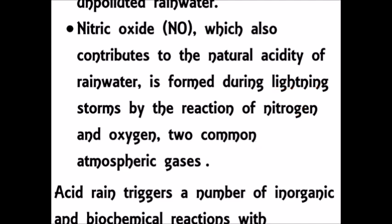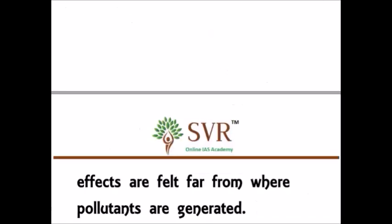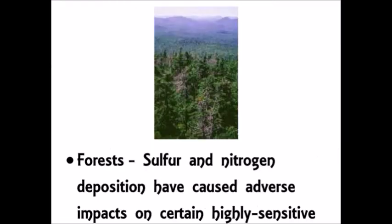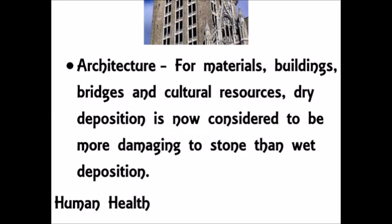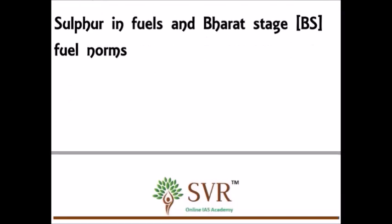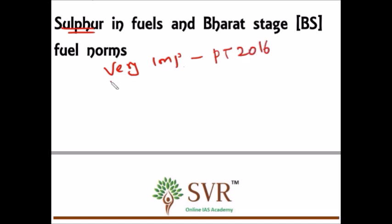We use petrol and diesel in our vehicles, and sulfur is present in these fuels. You may have heard about Euro fuel norms — Euro 1, 2, 3 — and Bharat Stage fuel norms — BS 1, 2, 3, 4, 6 — which appear in the news regularly. The purpose of Euro and Bharat Stage norms is to reduce the level of sulfur present in petrol and diesel.